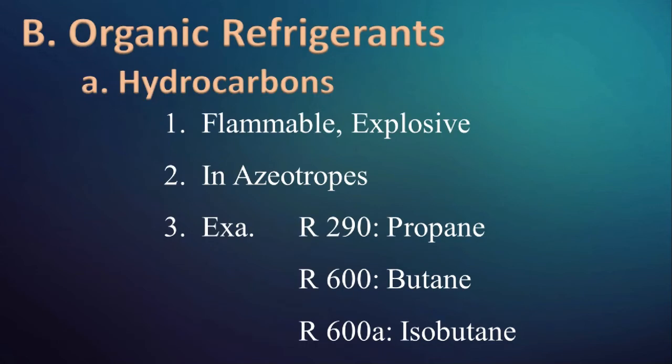Now let us see organic refrigerants. The first one is hydrocarbons. Hydrocarbons are flammable and explosive. Depending upon thermal properties like evaporation temperature and pressure, they are used in various industries, nowadays even by combining with other refrigerants, which are known as azeotropes. Some popular hydrocarbon refrigerants are R290 propane, R600 butane, and R600A isobutane.